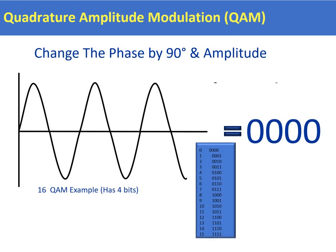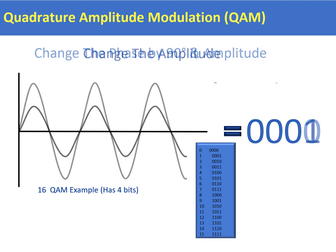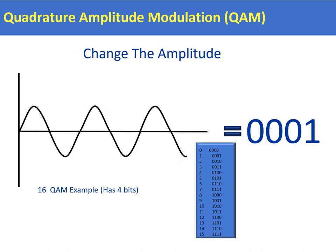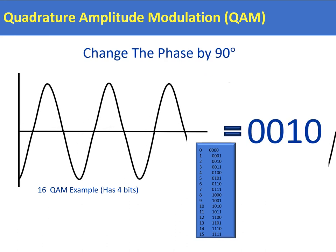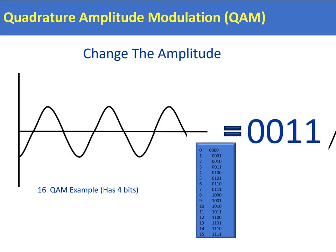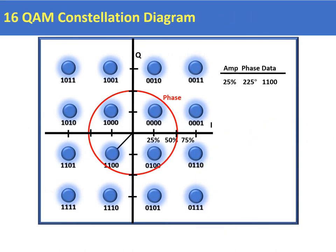But we can add more information to the carrier by not only changing the phase but by changing the amplitude as well. So by changing the phase of the carrier by 90 degrees and by changing the amplitude, we can have a four-bit symbol giving us 16 QAM, or 16 different permutations. For example, we're transmitting the symbol 0000; change the amplitude and we can transmit 0001; change the phase by 90 degrees and we get 0010, and so on. By simply changing the phase and the amplitude we can have 16 different symbols, as clearly shown on the 16 QAM constellation diagram.